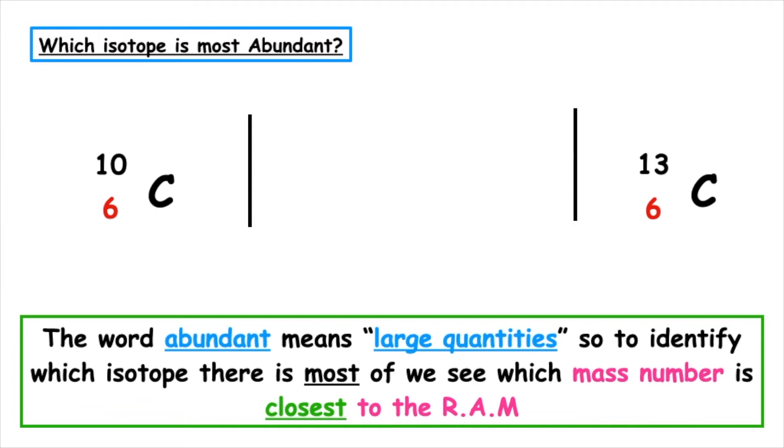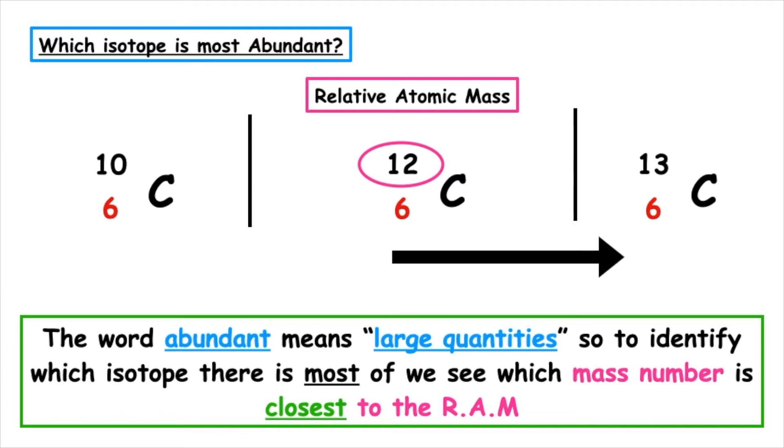In this example, the relative atomic mass of carbon is 12. So which isotope is the most abundant? 12 is closer to 13 than it is 10, which means carbon 13 is the most abundant isotope.